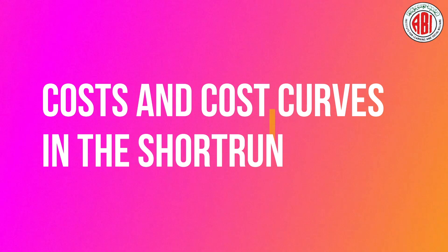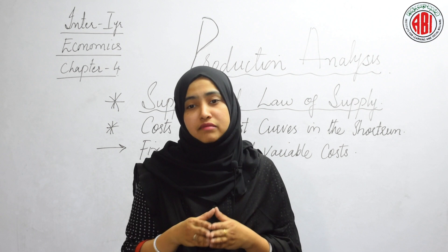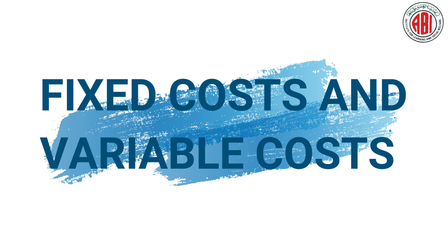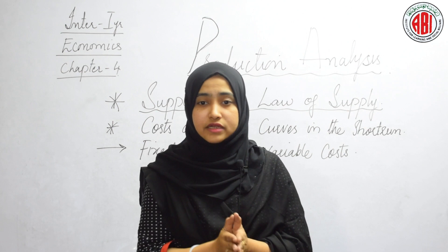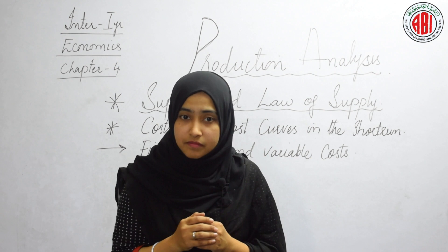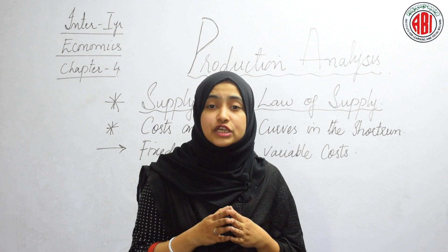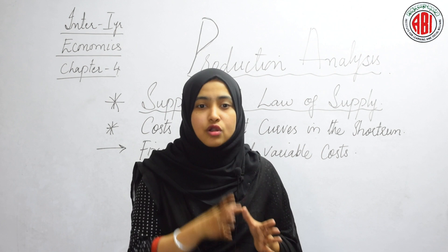Now we will continue the topic from cost and the cost curves in the short run. In the short run, the cost faced by a firm can be classified into two types: fixed cost and variable cost. The fixed cost of a firm are those costs that do not vary with the change in output. The value of fixed cost is always positive even when production activity does not take place or is zero. The firm has to bear the fixed cost even when it is temporarily shut down. Marshall has called these costs as supplementary cost or overhead costs.